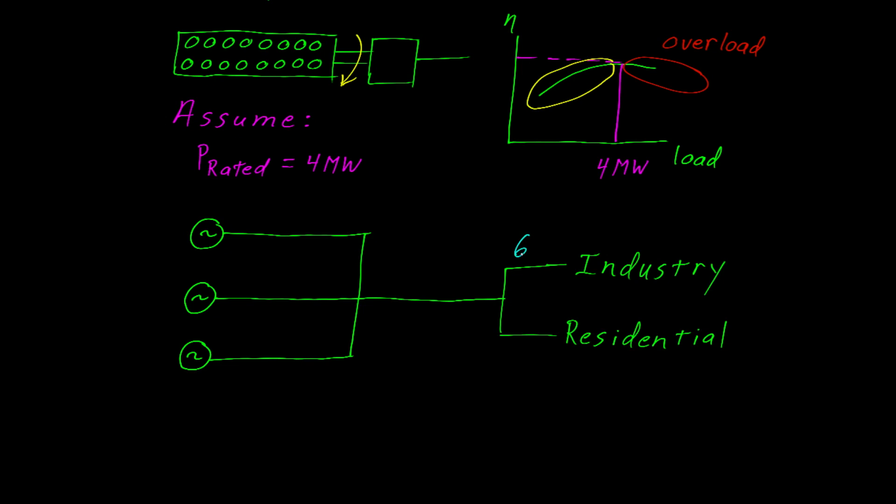And just so we have some numbers to work with, let's assume that the industry is consuming 6 megawatts of power, and the residential section is consuming 3 megawatts of power. Together, this is 9 megawatts of power that must be supplied by the three generators. If the generators are operating as they should, there will be a balance between them, and each generator will be providing 3 megawatts of power.